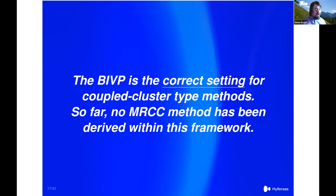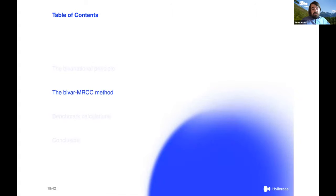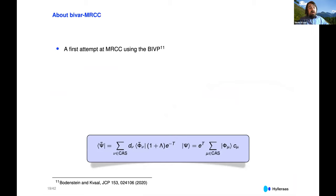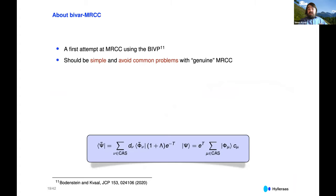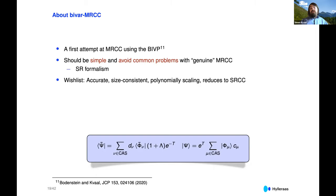No multi-reference coupled cluster method had been derived within this framework — that was the primary motivation for this work. This is a first attempt at a multi-reference coupled cluster method using the bivariational formalism. Our goal is that the method should be simple and avoid common problems with genuine multi-reference coupled cluster methods, so we settled for a single-reference type formalism. The wish list: it should be accurate, size consistent, polynomial scaling, and reduce to single-reference coupled cluster when applied to a single-reference system.